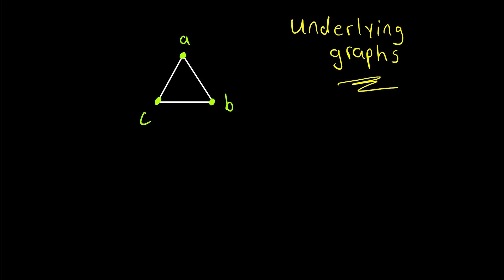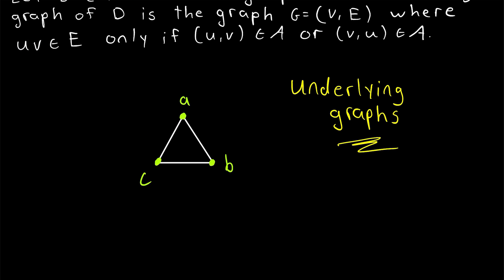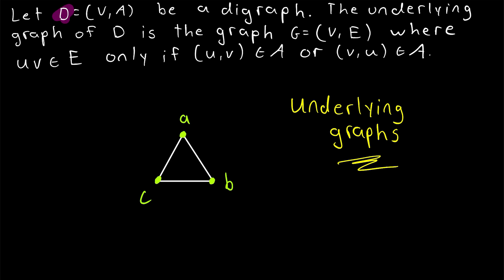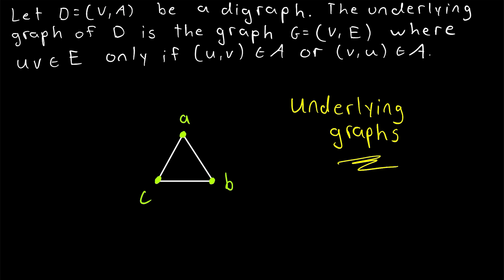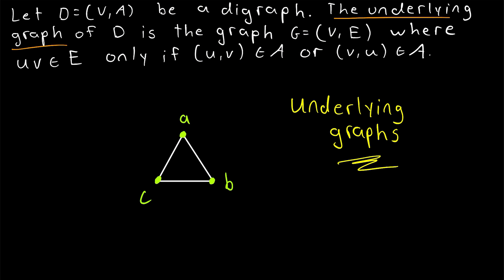Now, any time I have seen an actual rigorous definition of underlying graphs, this is how they're defined. So this would be that definition. If D is a directed graph or a digraph with vertex set V and an edge set or arc set A, if that's a digraph, then the underlying graph of D is the graph G, which has the same vertex set and an edge set E containing the edge UV, only if the ordered pair UV is an arc of the digraph D or VU is an arc of the digraph D.